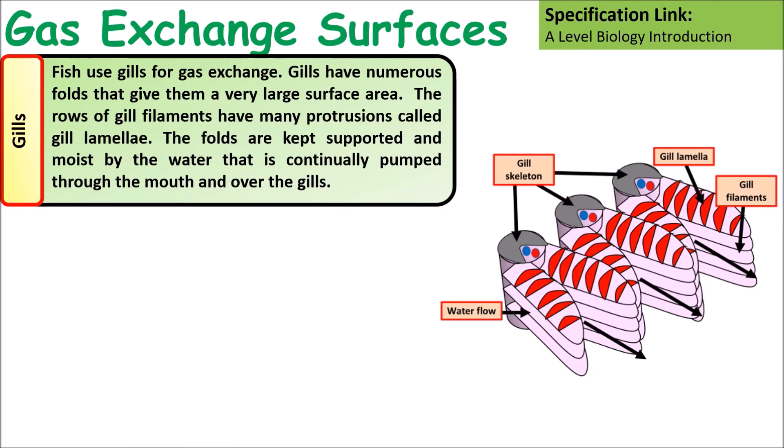The main gas exchange surface in fish are the gills. Gills have many similar adaptations that most gas exchange surfaces have. Gills have numerous folds in them to increase the surface area, with many rows and little protrusions called lamellae. The folds are kept supported and moist by the water, which is continuously pumped over them.